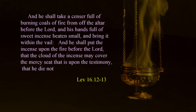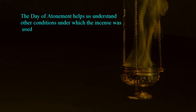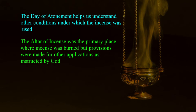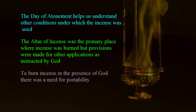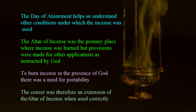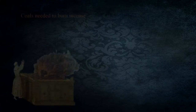Burning the incense before the Lord on the day of atonement connects it with the future forgiveness of sin and God's concealment of mercy reserved for the time when the Messiah would be revealed. The altar of incense was the primary place where the incense was burned, but provisions were made for it to be used in other applications as instructed by God. Censers were made to accommodate the need for portability, and in that sense the censer was an extension of the altar of incense and would be recognized by God when used correctly.